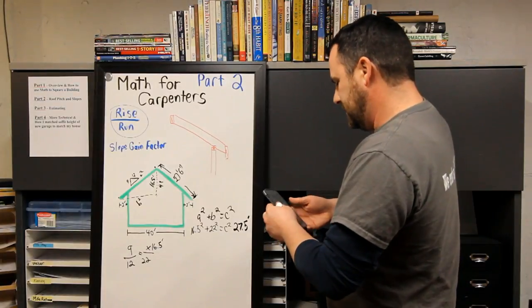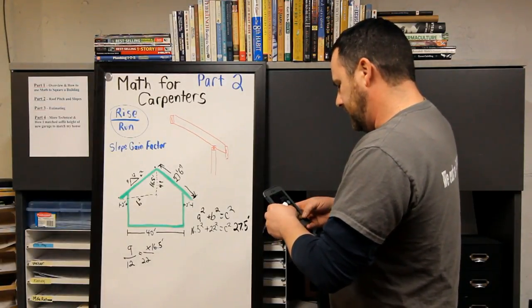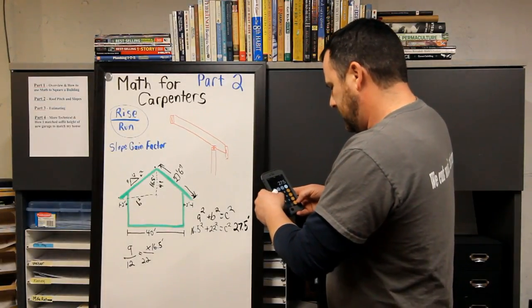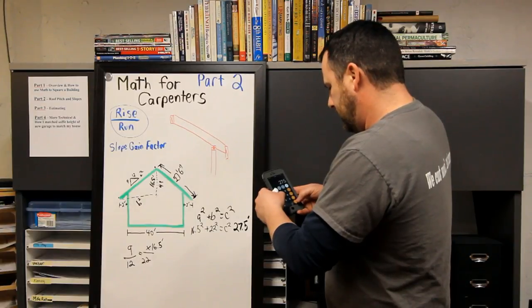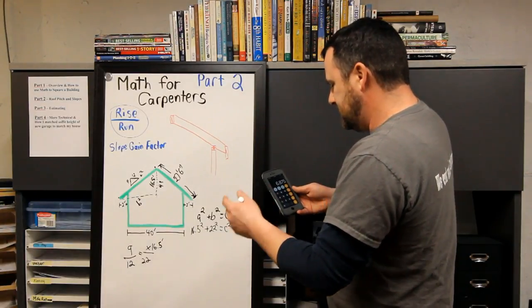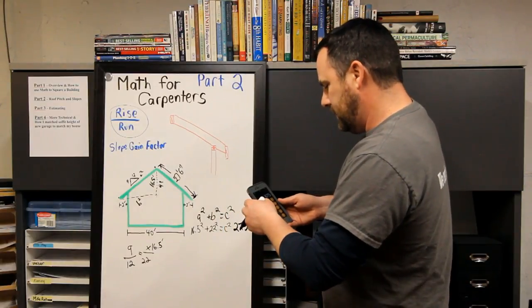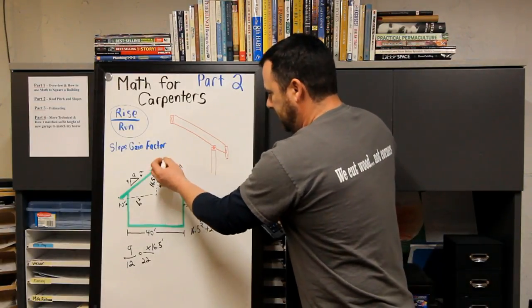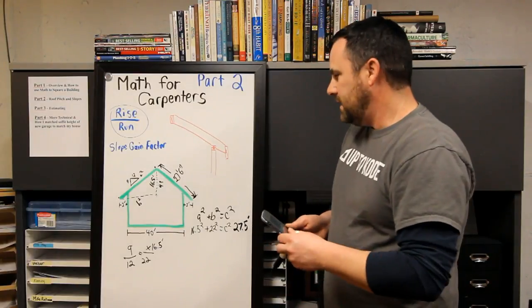So this roof from here to here is 27 foot 6 inches. Then you can figure out, okay, how much plywood am I going to need? I have four feet wide, so it's 6.875 rows of plywood. I'll need basically seven rows of plywood, which is 28 feet.